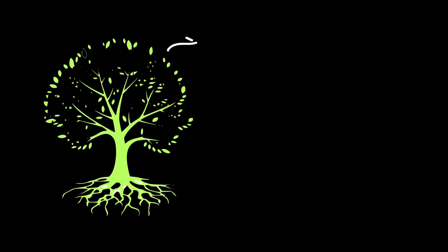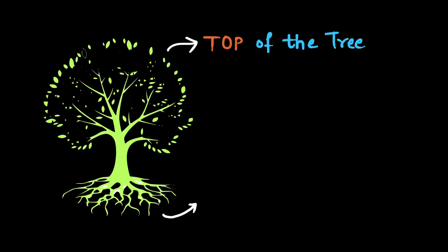Let's say we have this nice-looking tree. We can say that the leaves are at the top of the tree. Now what comes at the bottom of the tree? Roots are at the bottom of the tree.